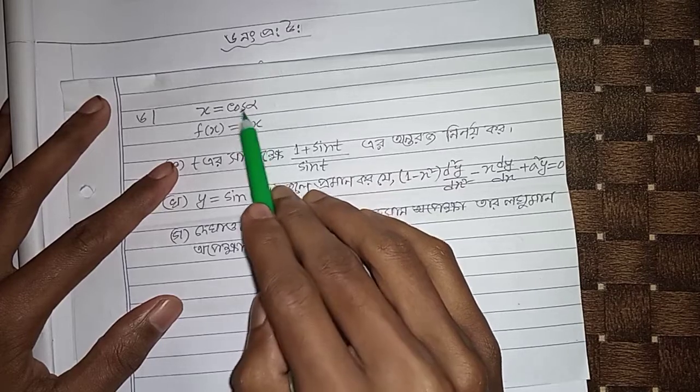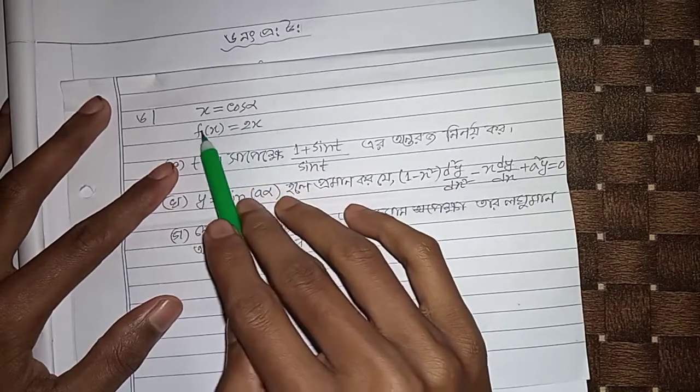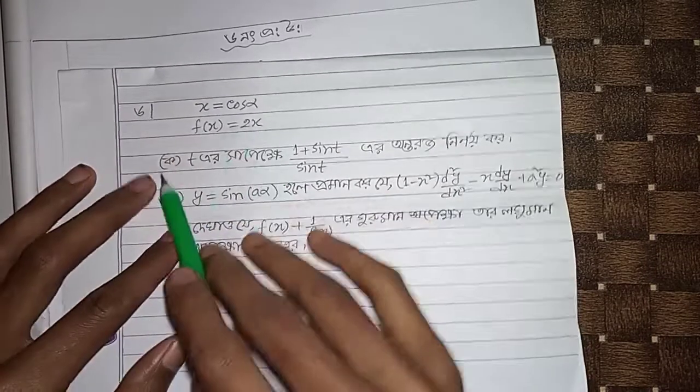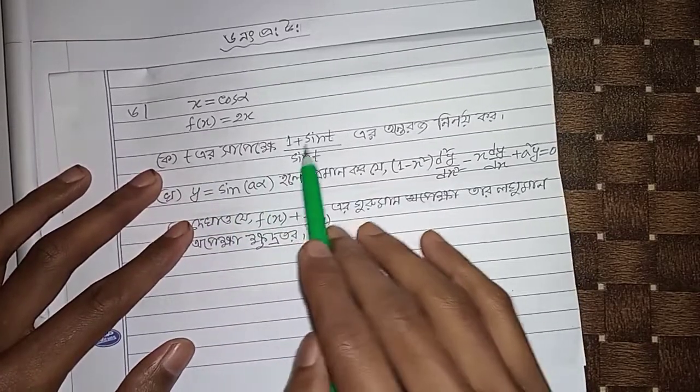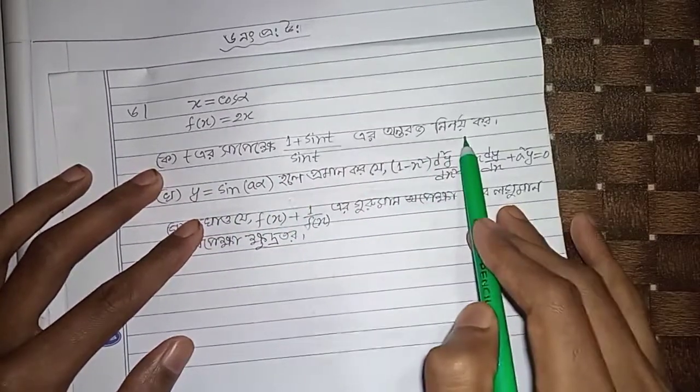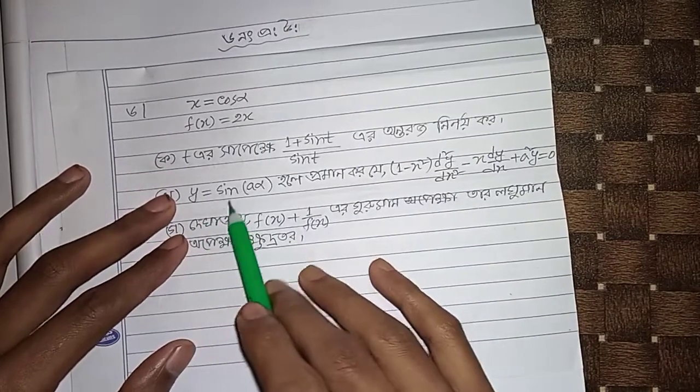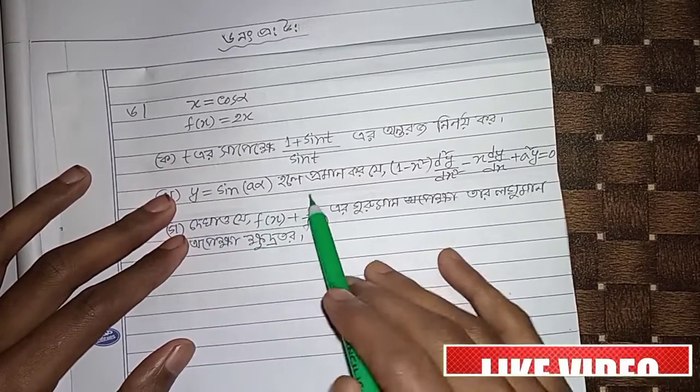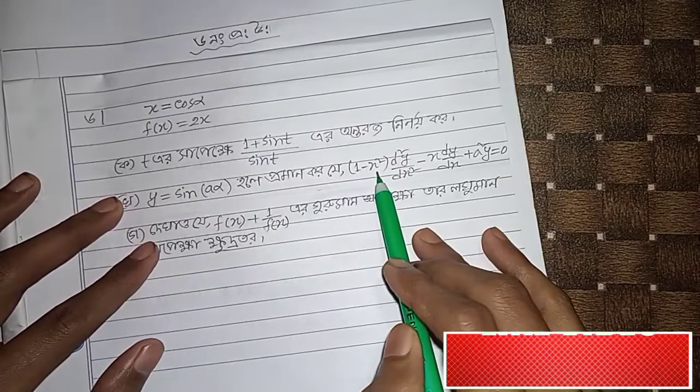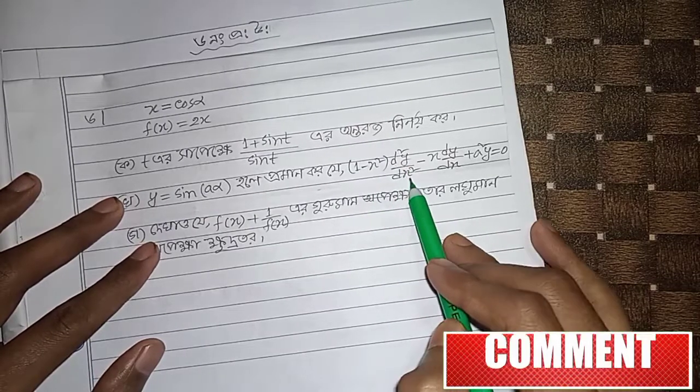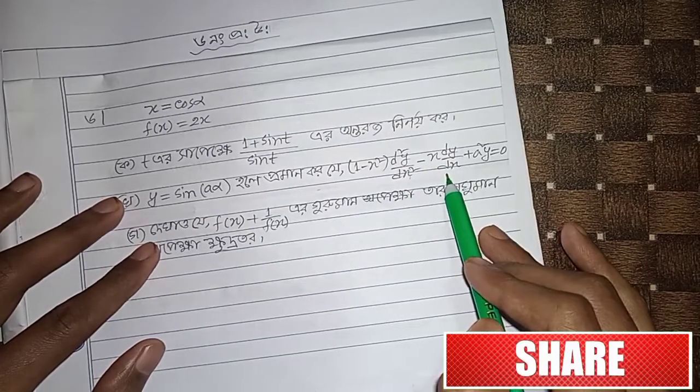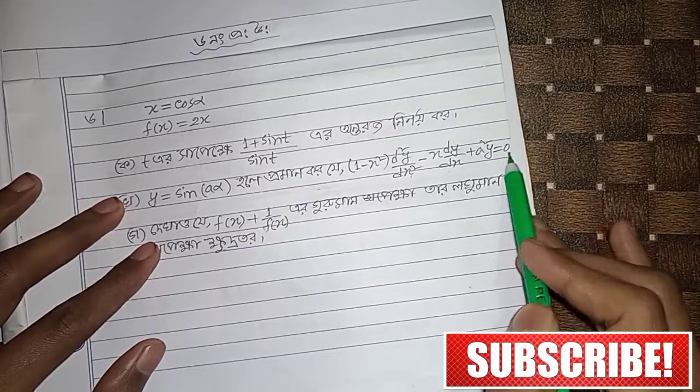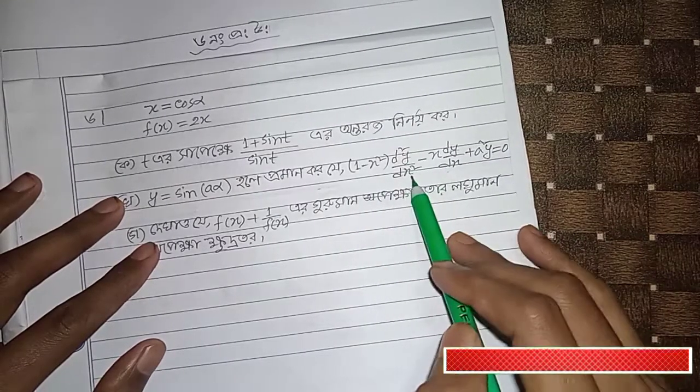The differential equation contains x equals cos alpha, then delta. We have 2x minus terms involving sin alpha and cos alpha. The equation is one minus x squared d²y/dx² minus x dy/dx plus a²y equals zero.